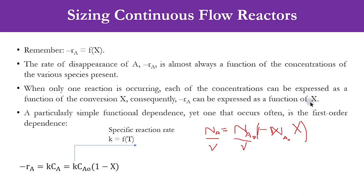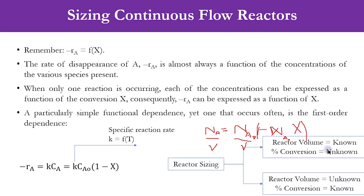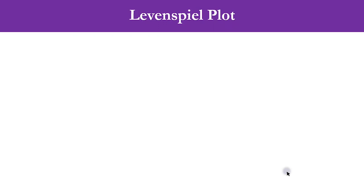For multiple reactions, the kinetics will be different — reversible or irreversible in nature — as we will see in chapters 3 and 4. During reactor sizing there are two cases: number one, we know the reactor volume but not the percentage conversion; and number two, we know the percentage conversion but not the reactor volume. One factor is unknown and we have to calculate it. Before sizing the reactor, we need to understand the Levenspiel plot.